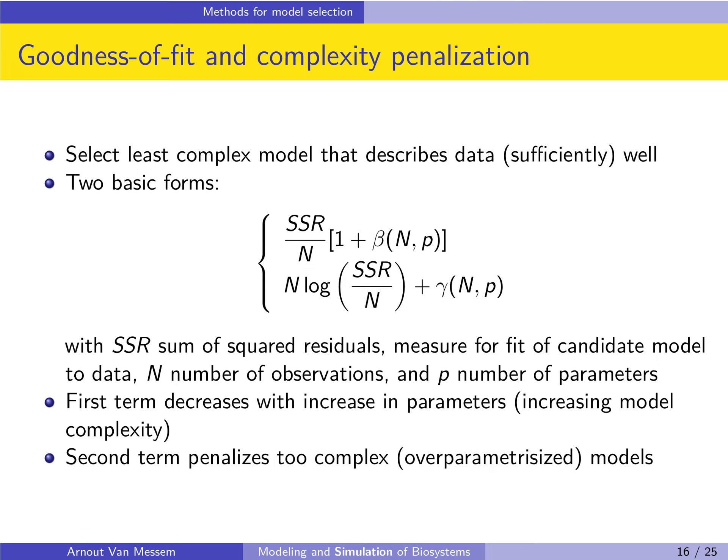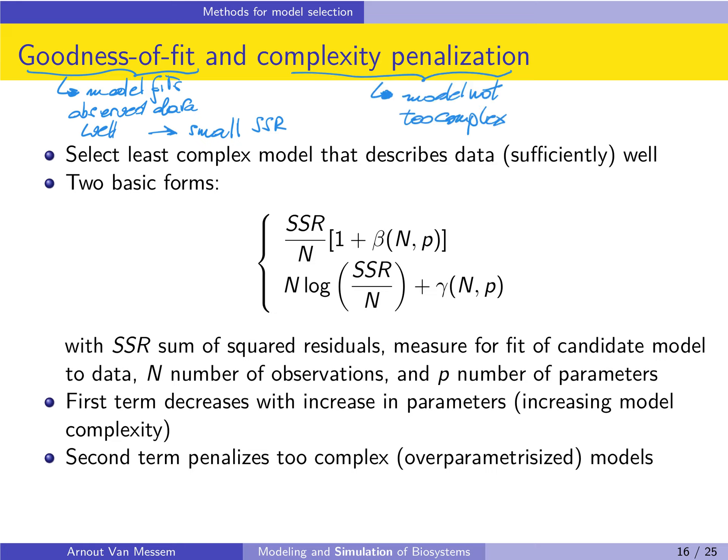For goodness of fit and complexity penalization, we use the variance-bias trade-off discussed earlier. We want to select the least complex model that describes our data well enough — reducing the number of parameters as much as possible while obtaining a model that follows the observed data. High goodness of fit means the differences between observed data and model estimates are small, measured by the sum of squared residuals. Complexity penalization ensures the model is not too complex, expressed through the number of parameters.